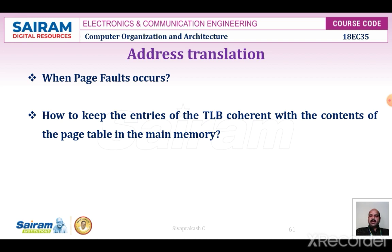To keep TLB entries coherent with the page table in main memory: when the OS changes the content of the page table in main memory, it must simultaneously invalidate the corresponding entries in the TLB. A control bit provided in the TLB is used to invalidate the entry. If an entry is invalidated, the TLB fetches the information from the page table following the same process as if the entry were not found in the TLB, i.e., a miss.